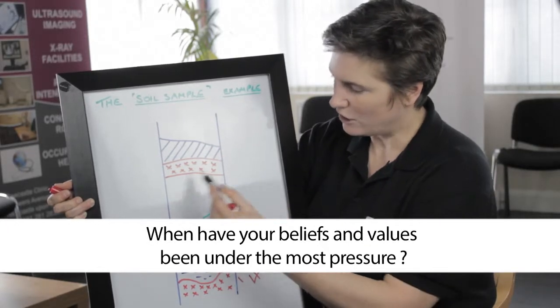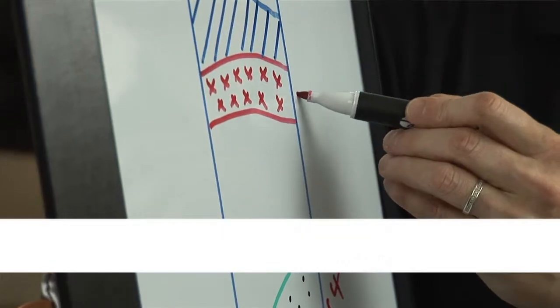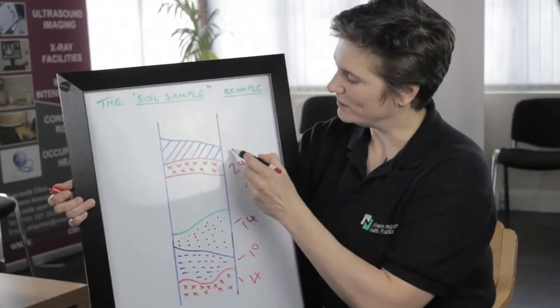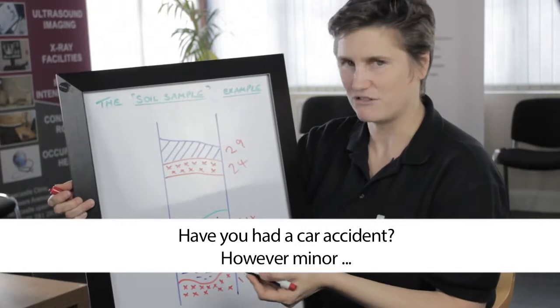It could be then you have a normal period of time, but at 24 you may have lost your first job, and at 29 you might have had a car crash.